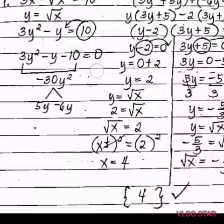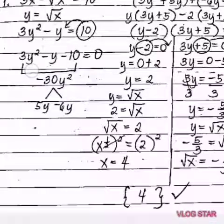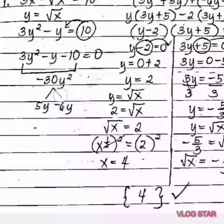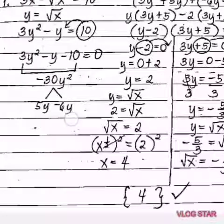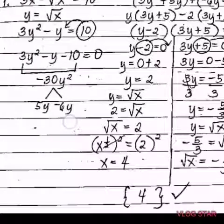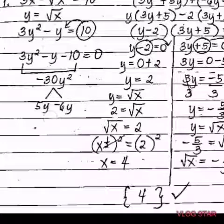The equation is now in standard form, so we can perform factoring or use the quadratic formula. Here I use factoring. Multiply the first term by the last term: 3y squared times negative 10 gives negative 30y squared. The factors of negative 30y squared that add up to negative 1 are 5y and negative 6y, since 5y times negative 6y is negative 30y squared and 5y plus negative 6y is negative y.